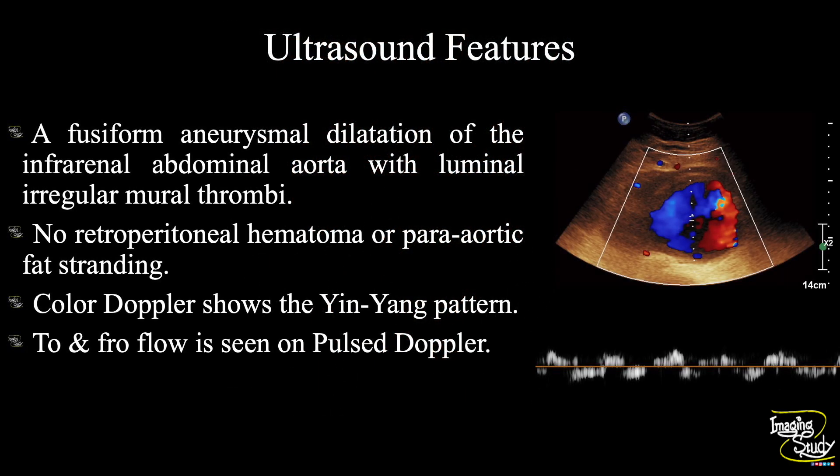In summary, a fusiform aneurysmal dilatation of the infrarenal abdominal aorta with luminal irregular mural thrombi was noted. No retroperitoneal hematoma or periaortic fat stranding was seen, which excludes the chance of rupture. Color Doppler shows the typical yin-yang pattern or Pepsi sign, and to-and-fro flow is noted on pulsed Doppler.